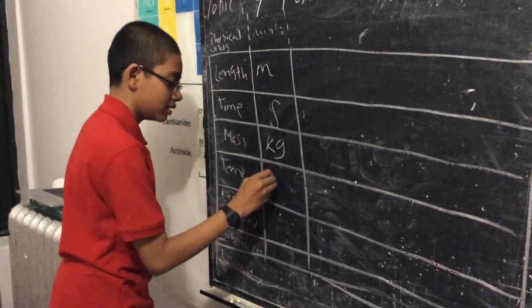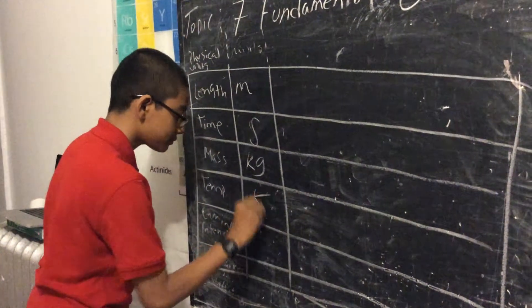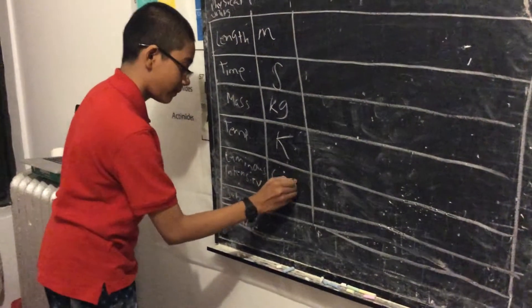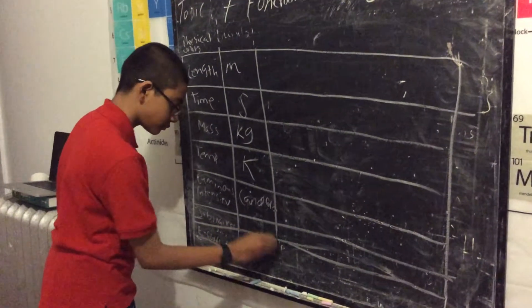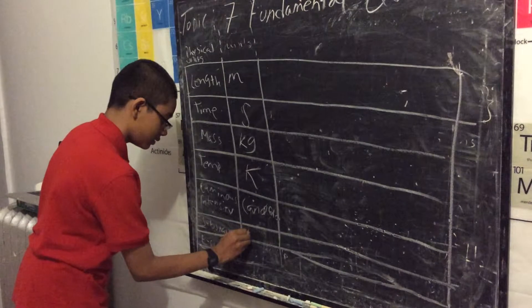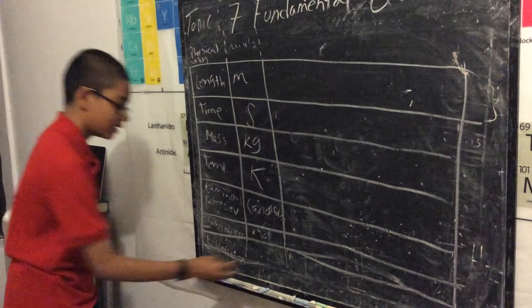For temperature we measure in Kelvin, and for luminous intensity we use candela, and for substances we use moles, and for electric current we use ampere.